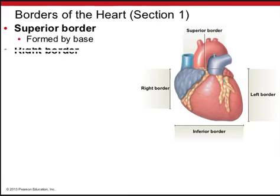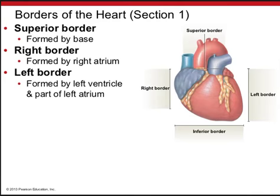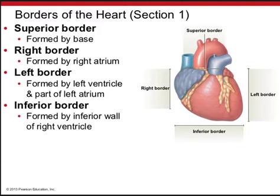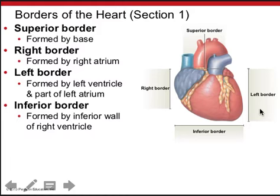The superior border of the heart is formed by the base, while the right border is formed by the right atrium. The left border is formed by the ventricle and part of the left atrium, with the inferior border formed by the inferior wall of the right ventricle. The atria and ventricles are the chambers through which blood flows. The two upper chambers — the atria — receive blood; the right atrium from the body, the left atrium from the lungs. The ventricles receive blood from the atria and eject it into the great vessels: the right ventricle into the pulmonary trunk, the left ventricle into the aorta.